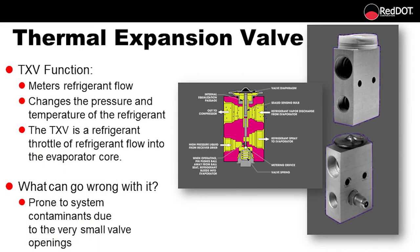The thermal expansion valve, also referred to as the TXV: its function is to meter refrigerant flow and change the pressure and temperature of the refrigerant. The TXV is a refrigerant throttle controlling the flow of refrigerant into the evaporator core. What can go wrong with it? It is prone to system contaminants due to a very small valve opening.